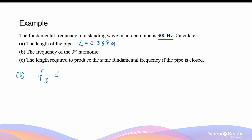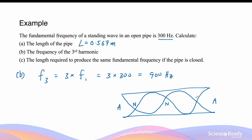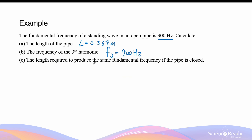What is the frequency of the third harmonic in the open pipe? The frequency of the third harmonic is simply three times the fundamental frequency: 3 × 300 = 900 Hz. To illustrate what the standing wave looks like, the pipe has the same length but for the third harmonic we expect three nodes — antinodes at the two open ends and three nodes distributed inside the pipe.